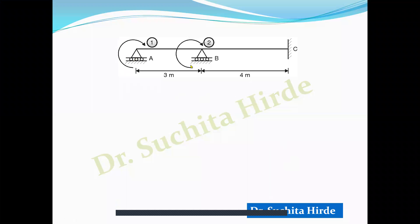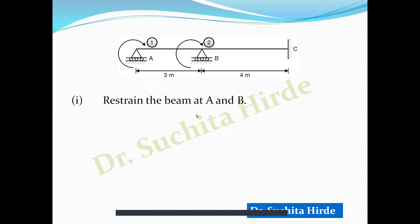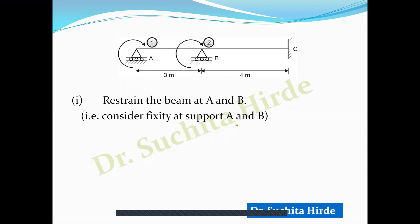This is the given system with two simple supports and one fixed support. The unknowns are theta A and theta B, so we have selected two coordinates: coordinate 1 and coordinate 2. The first step is to restrain the beam at A and B — since they are simple supports, we make them fixed. So the first step is: consider fixity at supports A and B.